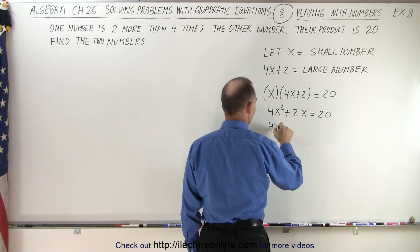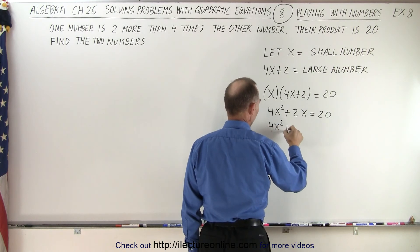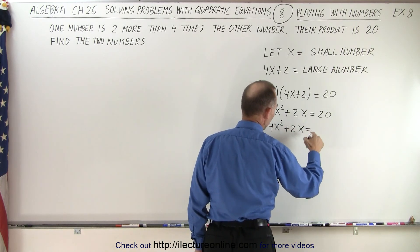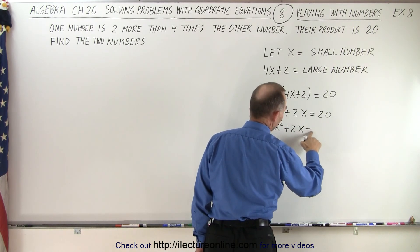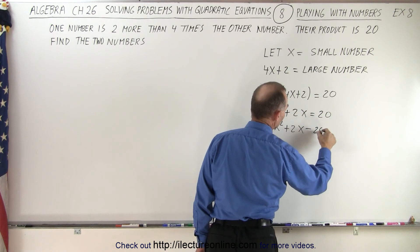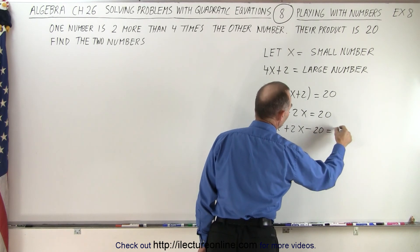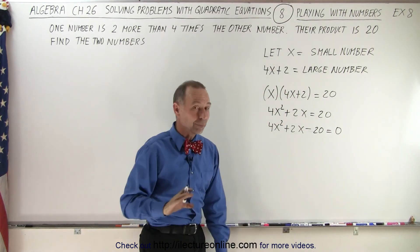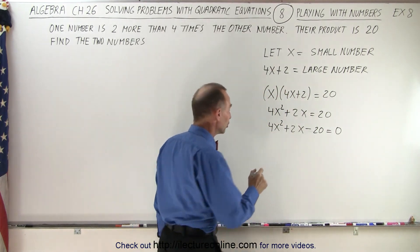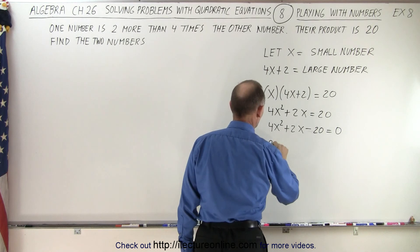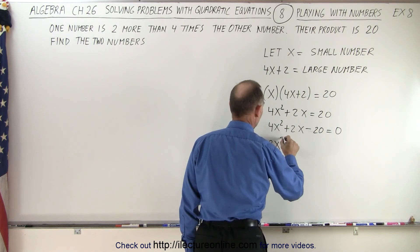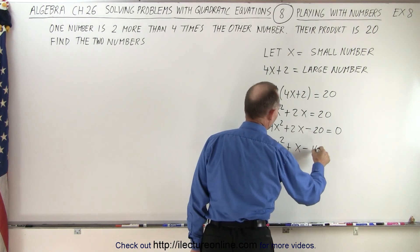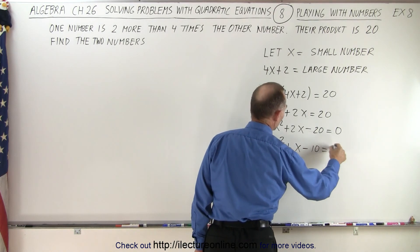Moving the 20 across, we get 4x² + 2x − 20 = 0. Notice we can divide both sides by two, so we get 2x² + x − 10 = 0.